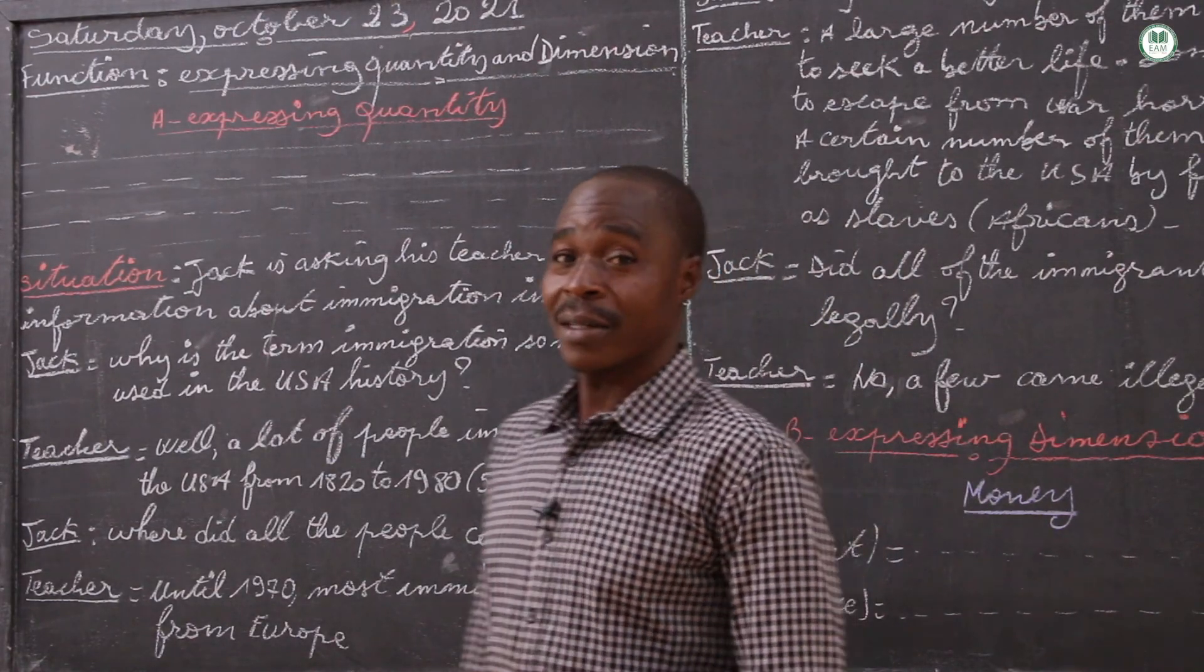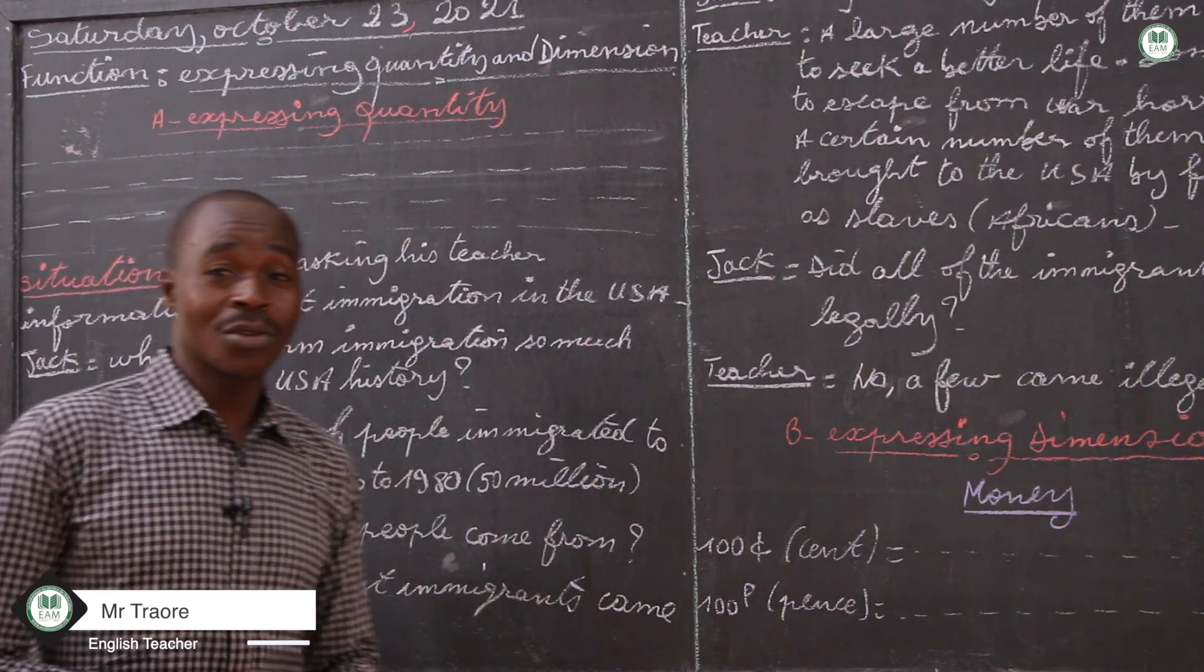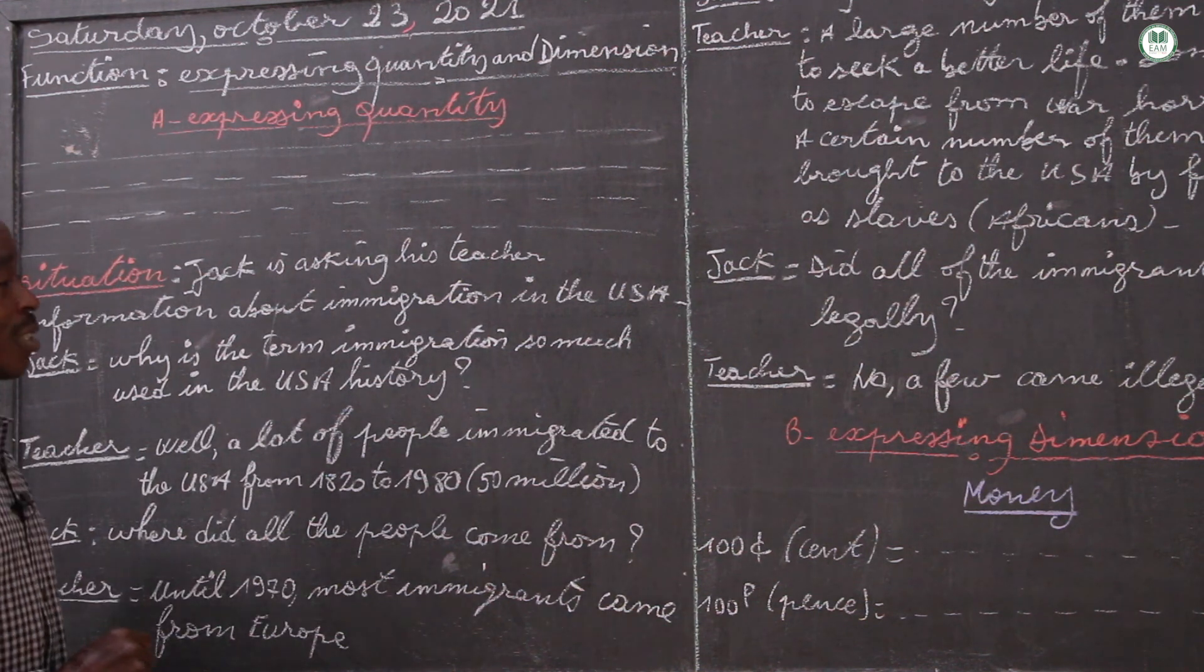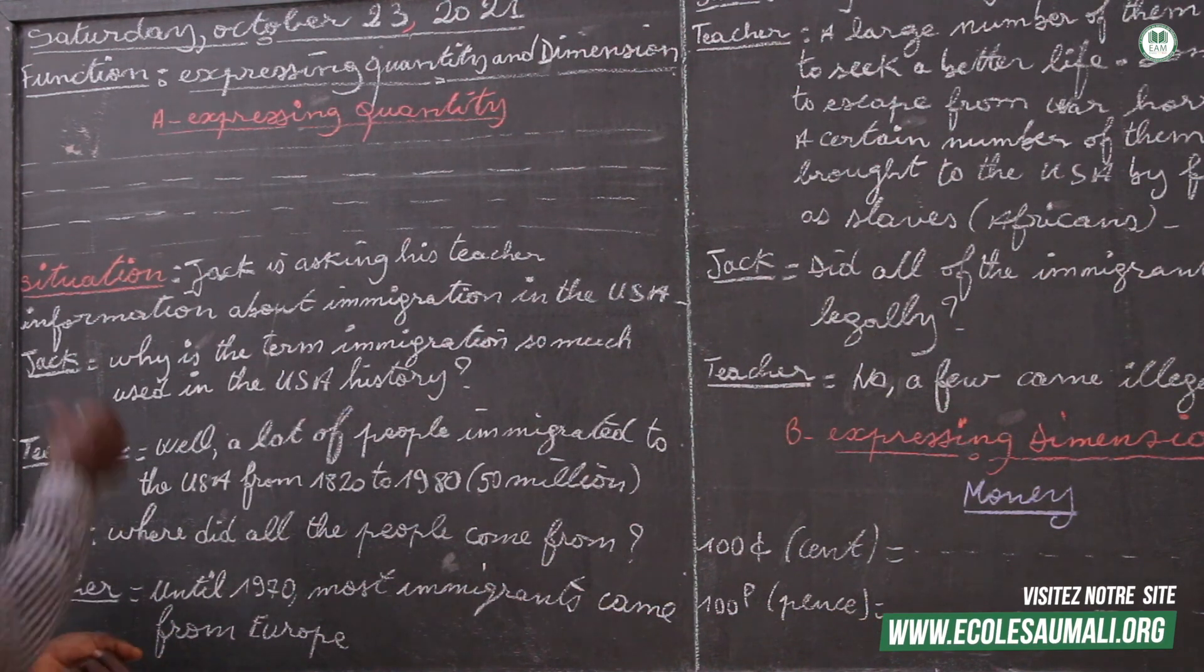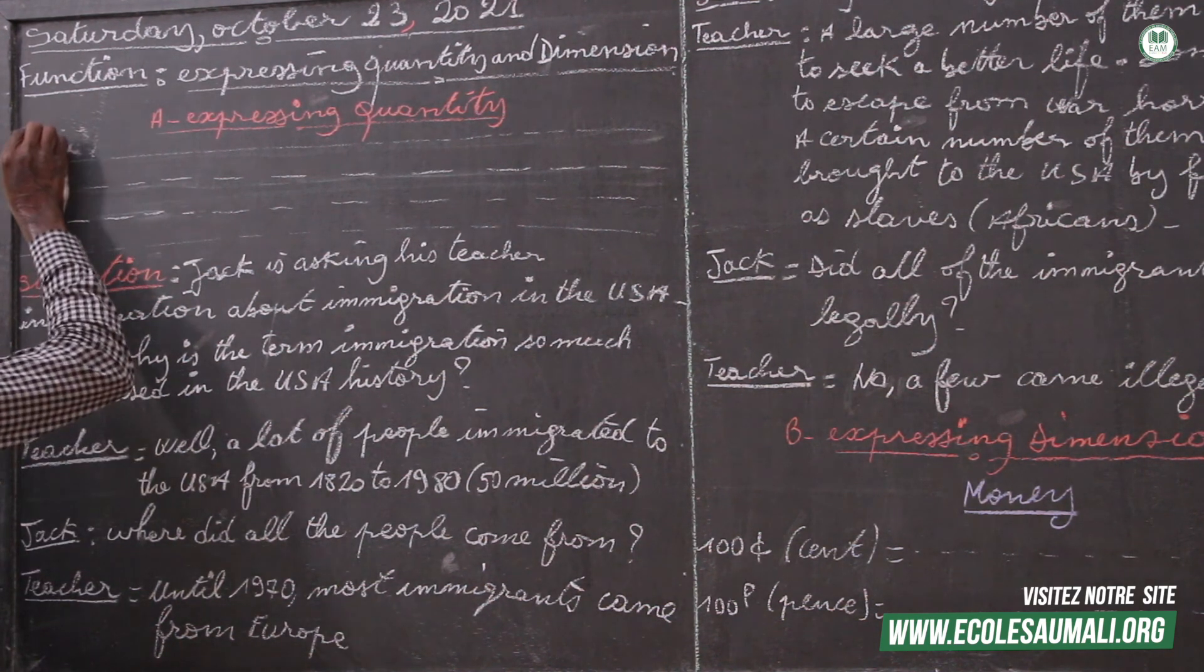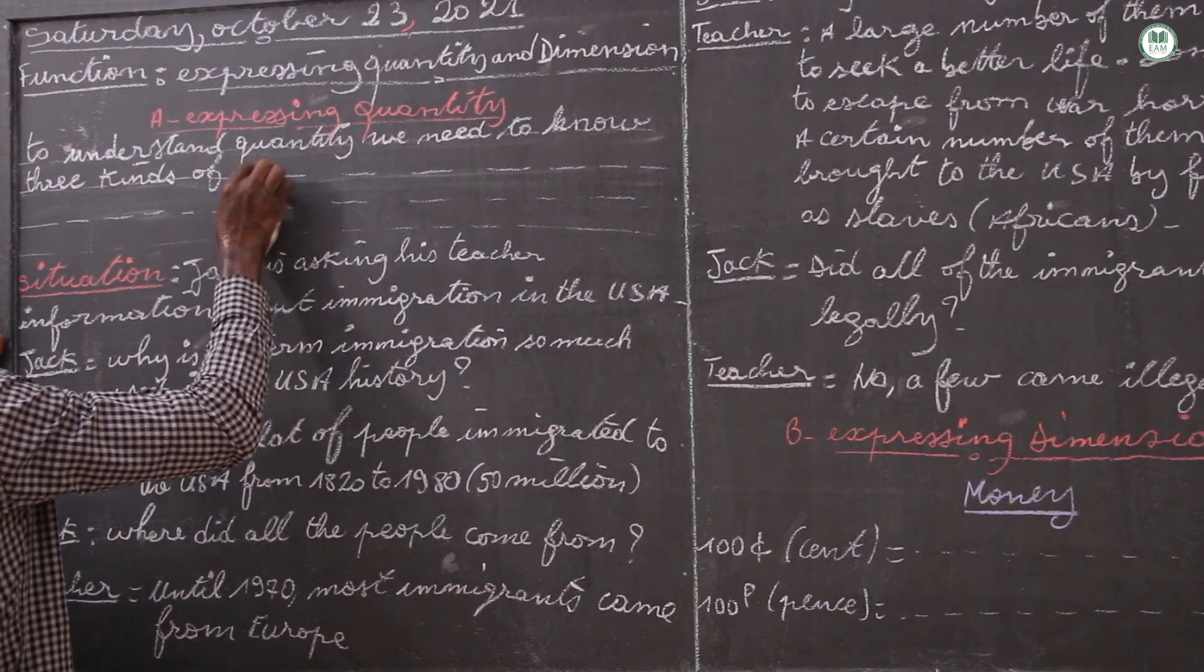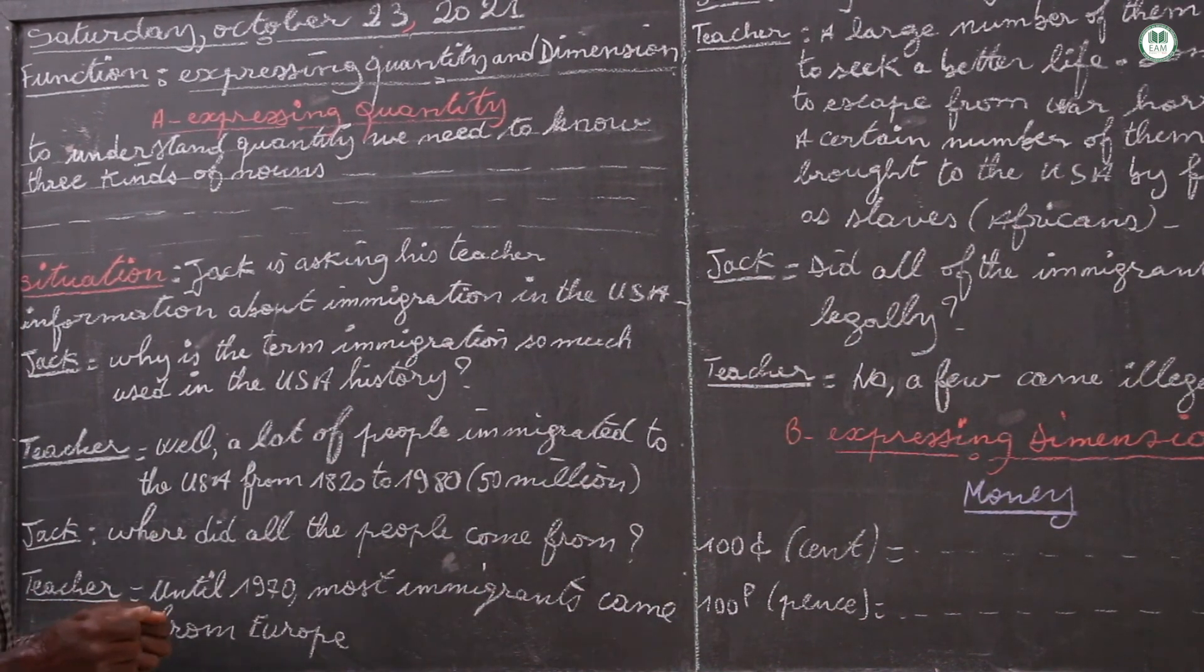Okay, good morning class. Today we're dealing with quantity and dimension, and this is what we will try to see. How to understand quantity and dimension? Number one, we will visit quantity first, and it is clear the kinds of nouns. It is imperative to separate the nouns.